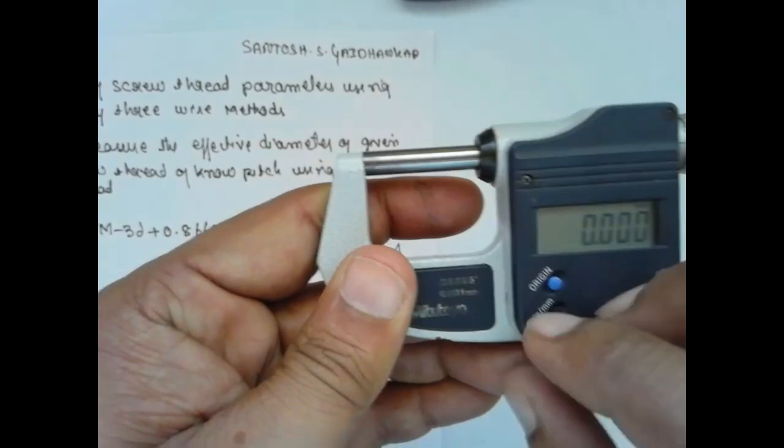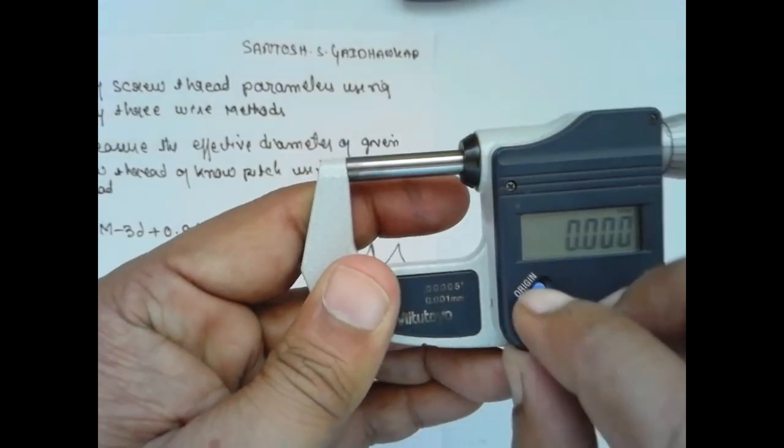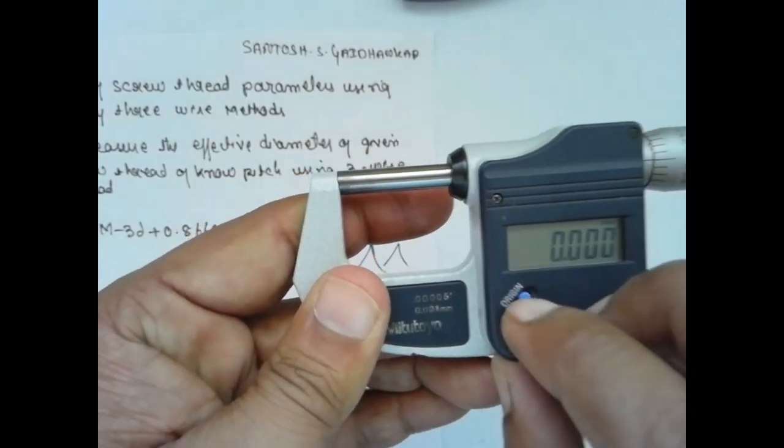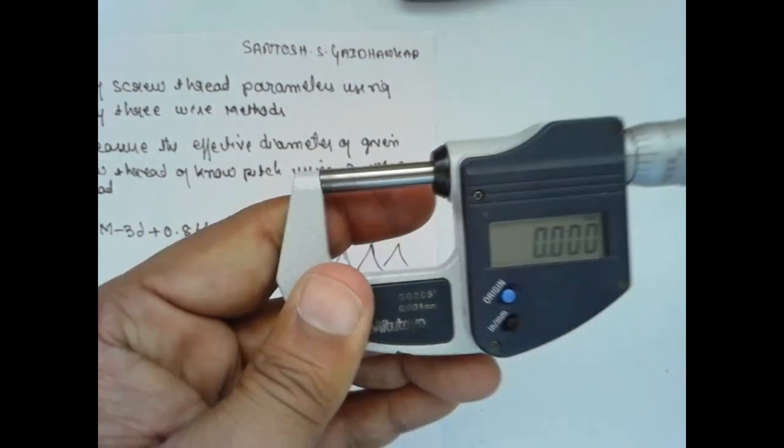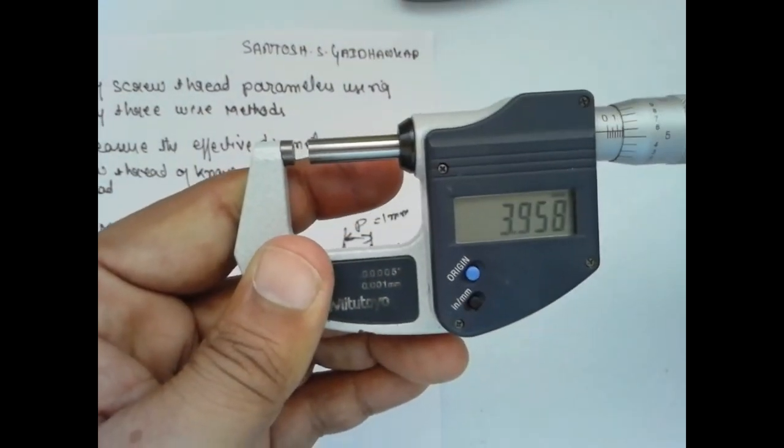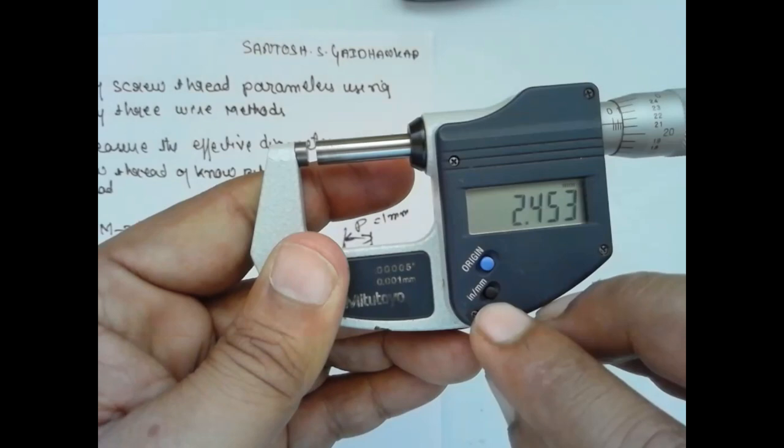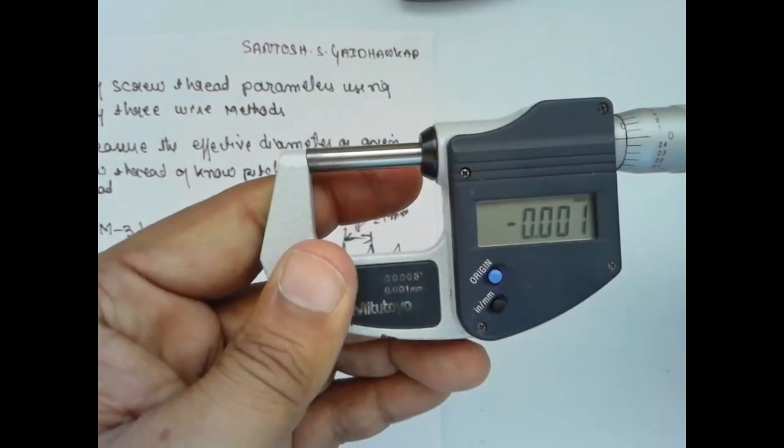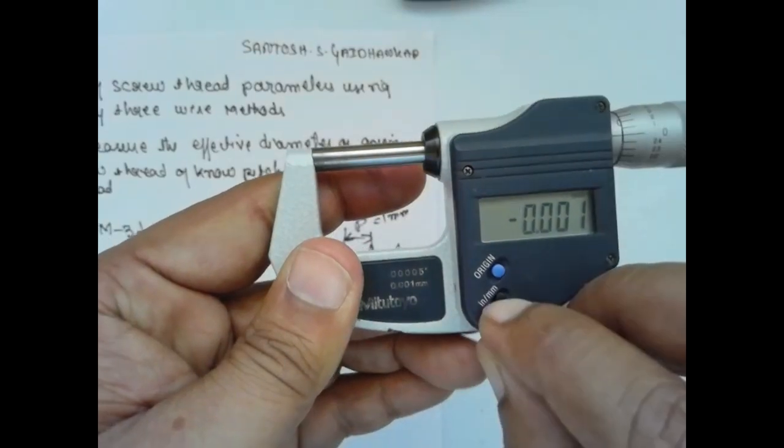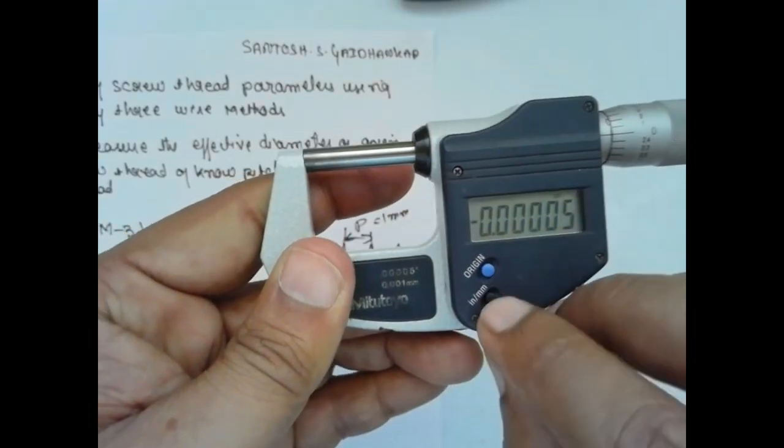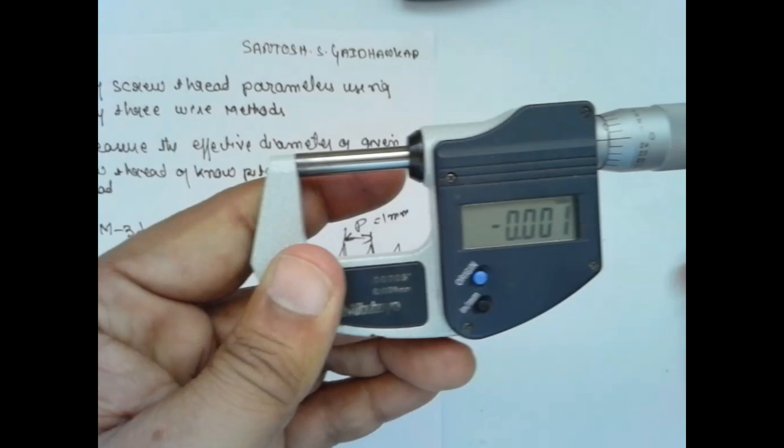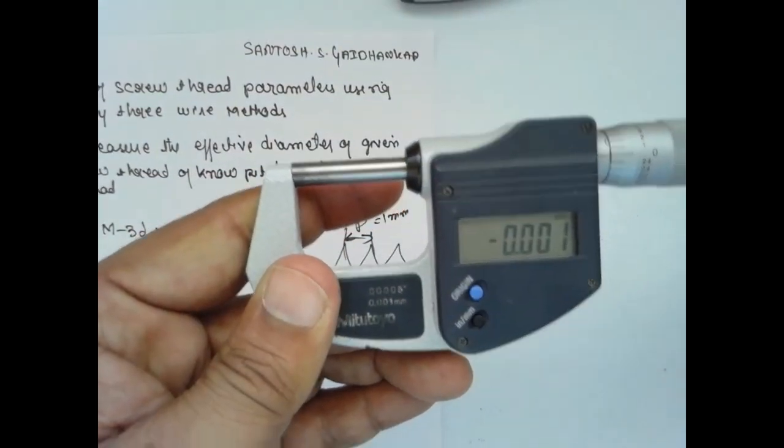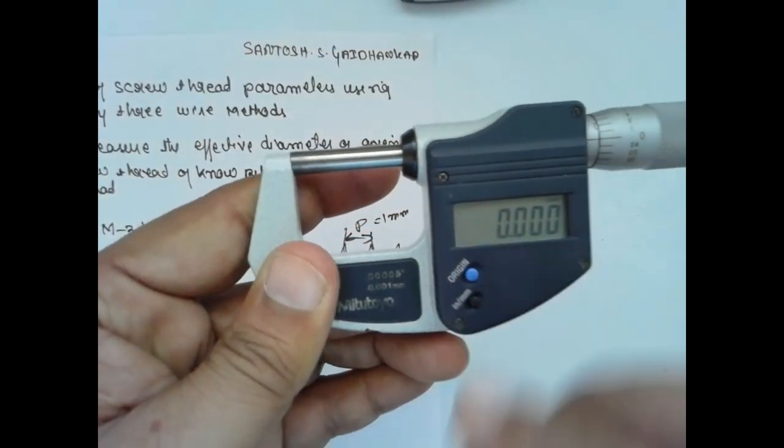Now when the spindle touches the hand, make it to the origin. You have to press twice. Now see the readings are appearing over that digital indicator. The inch and mm - they have mentioned inch and mm here. Now we are placing in terms of mm, make it zero.